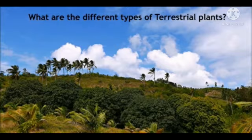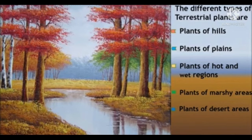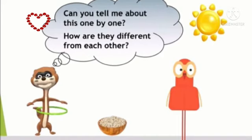Now we can check the types of terrestrial plants. Based on adaptation, we can classify terrestrial plants into different types. Some plants live on hills, some in plains, some in hot and cold regions, some in marshy areas, and some like cactus we can see in desert areas.